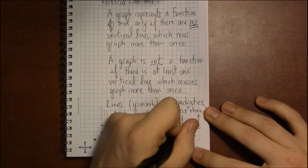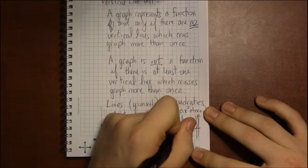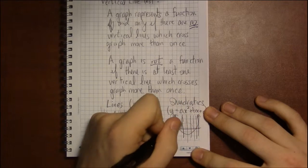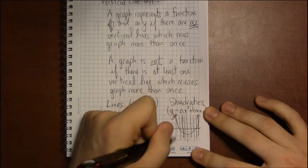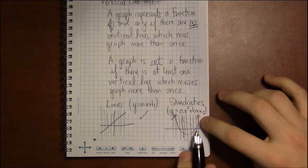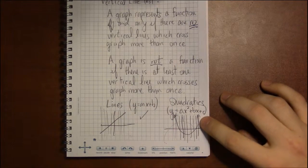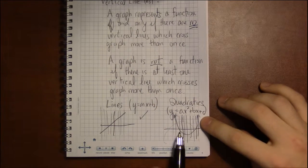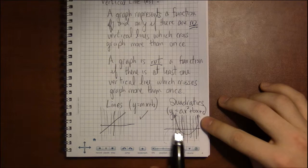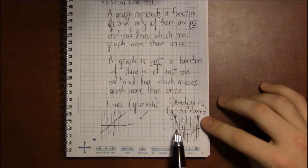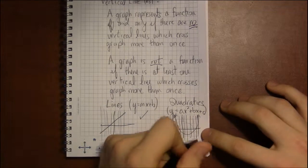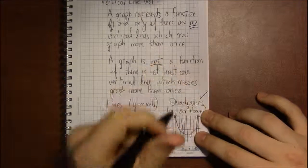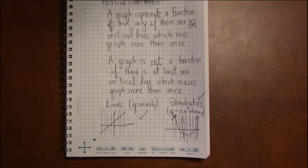But in either case, however many vertical lines I choose to draw and wherever I draw them, I'm always going to cross the graph at exactly one point, so there are no vertical lines that cross this graph at two or more points. So this passes the vertical line test and therefore all quadratics end up being functions as well.